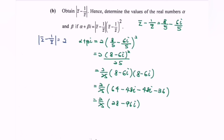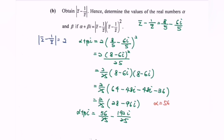Simplify the situation. So alpha plus beta i equals 56 over 25 minus 192i over 25. Therefore, alpha equals 56 over 25 and beta equals negative 192 over 25.